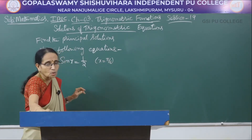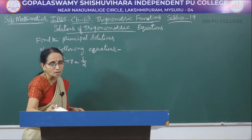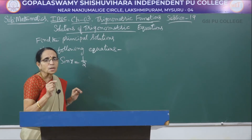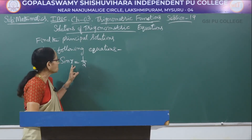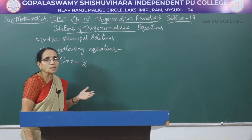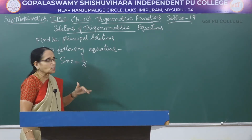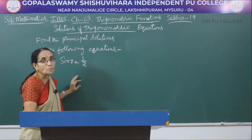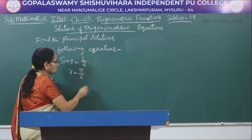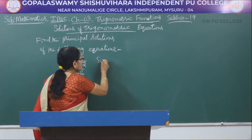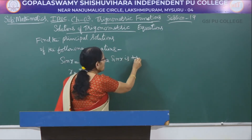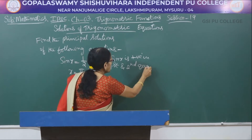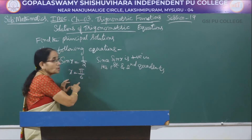Sin x = 1/2. Since it is positive 1/2, and sin is positive in the first quadrant as well as the second quadrant, the value of x may lie in the first quadrant or in the second quadrant. Both those values when substituted for x will give the value 1/2. The angle in the first quadrant is pi/6, so x = pi/6 is the first solution.